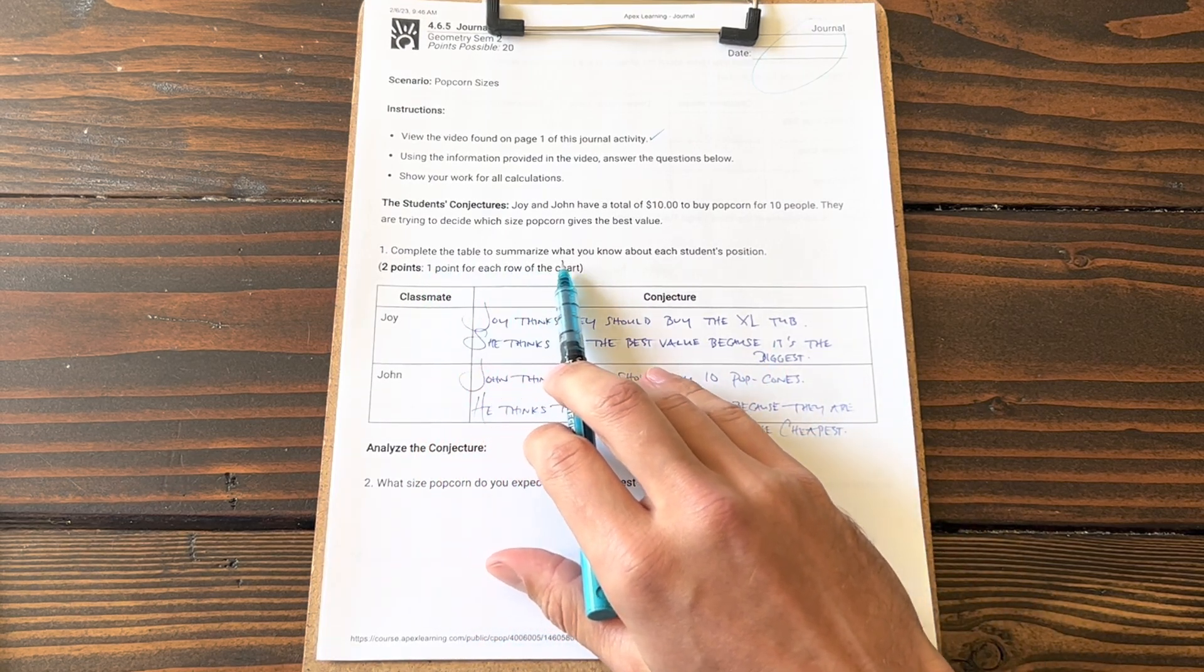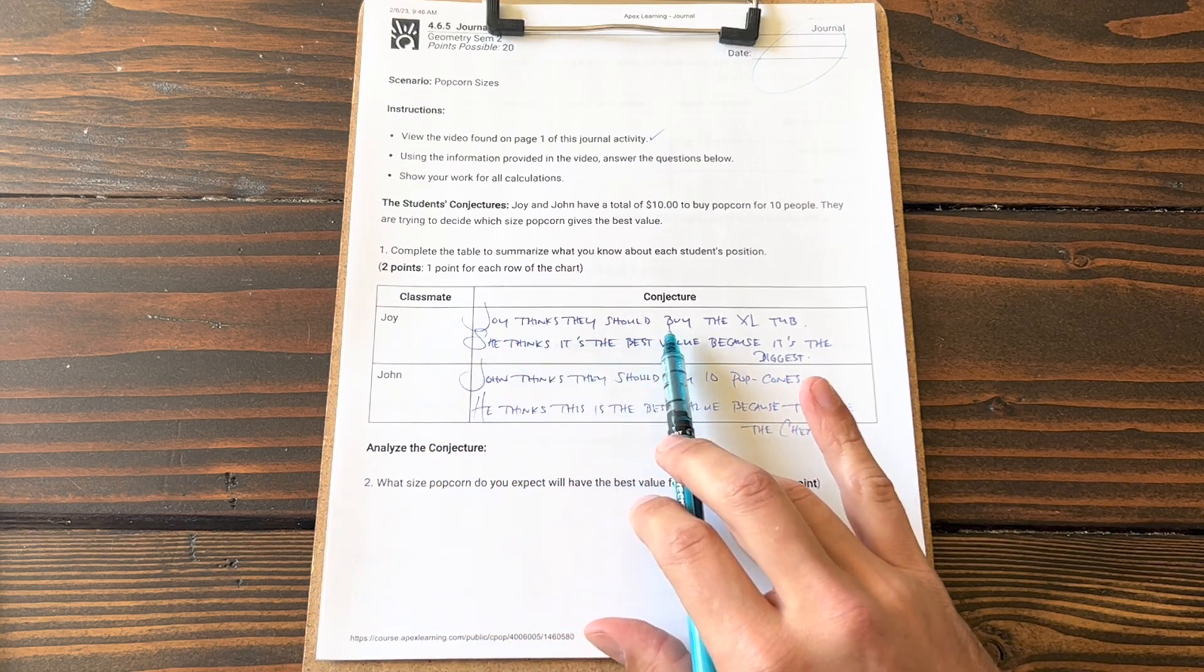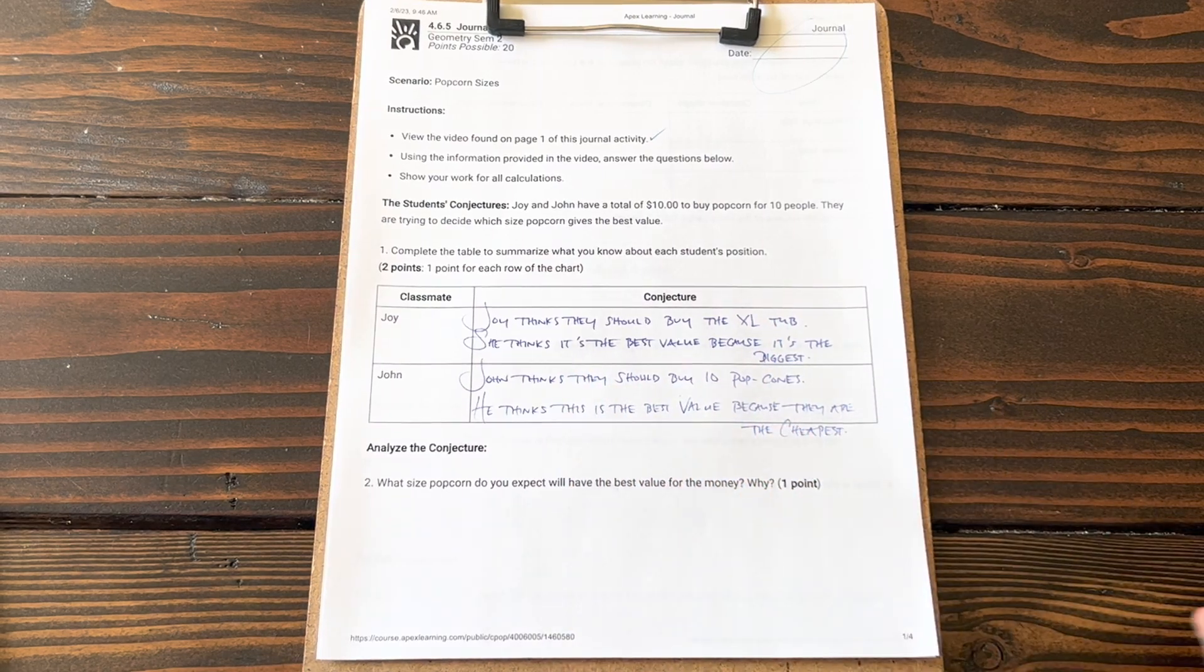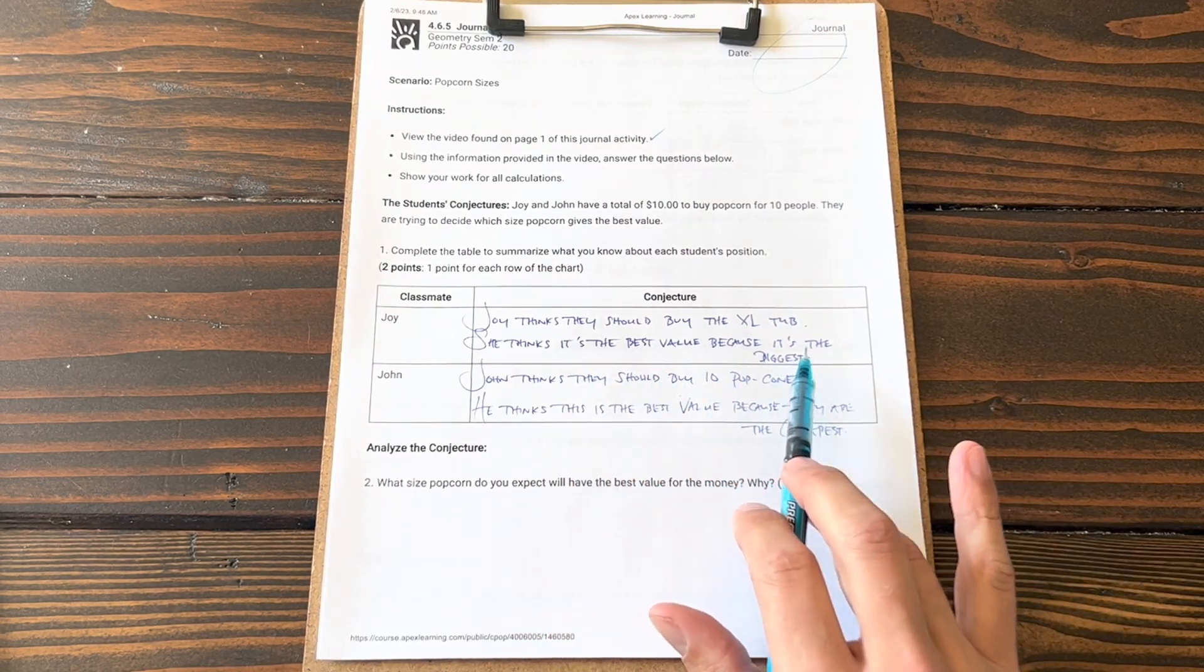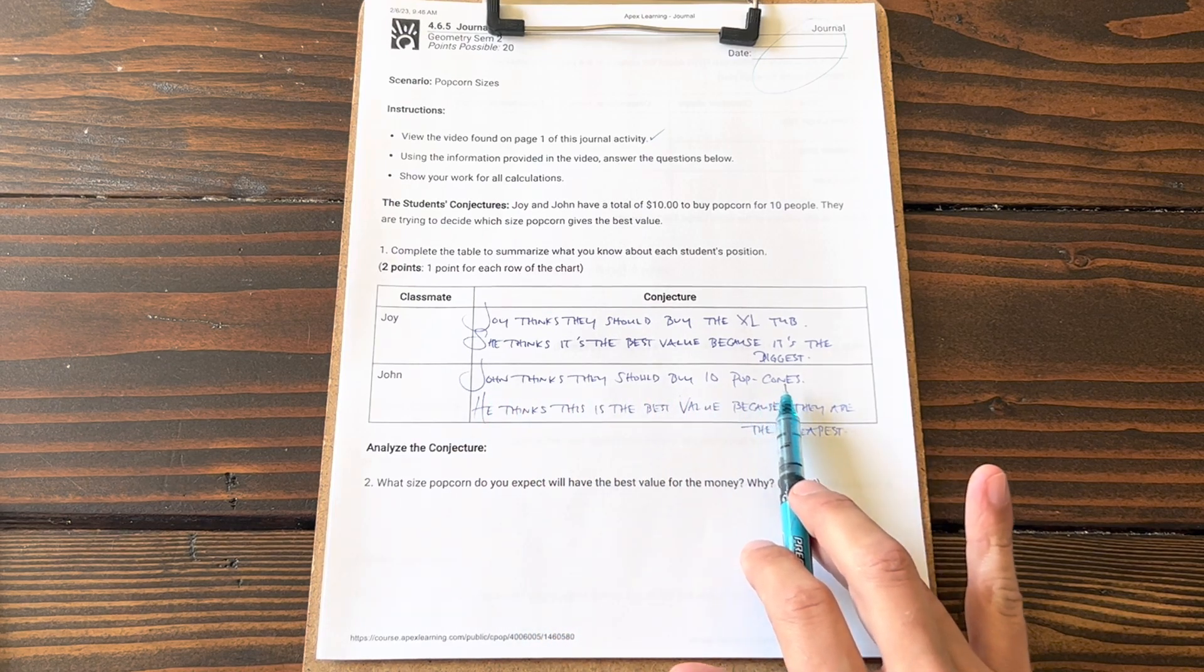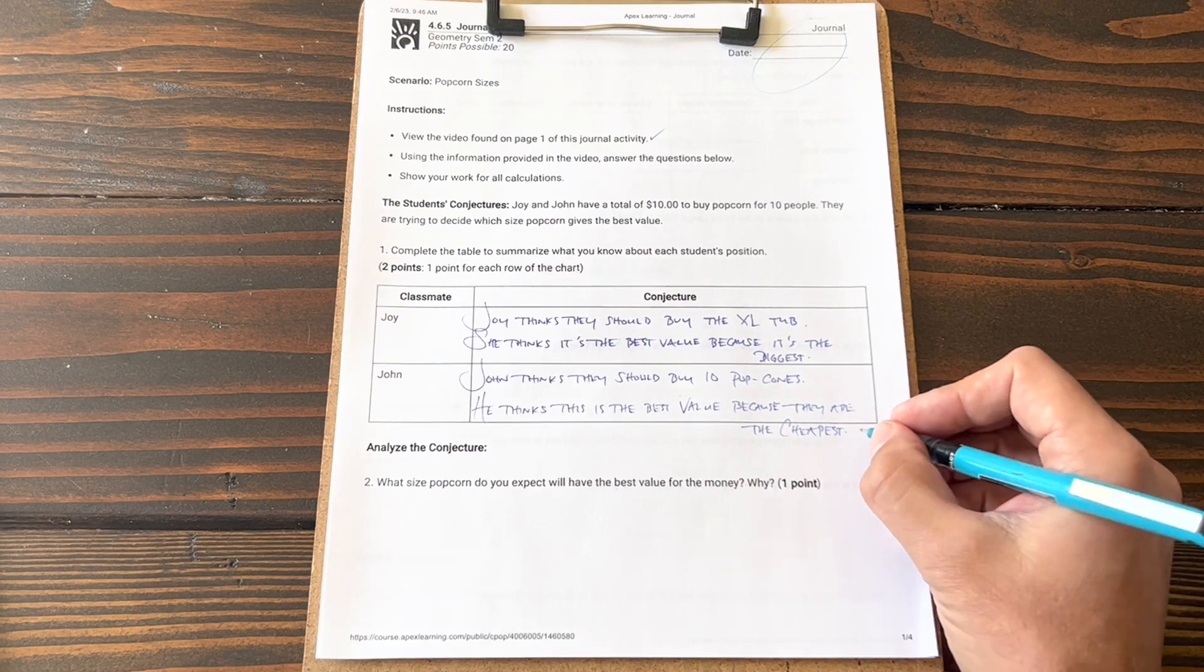I've pre-filled out this chart. Complete the table to summarize what you know about each student's position. Joy thinks that they should buy the extra large tub of popcorn. She thinks that the extra large tub will be the best value because it's the biggest. John thinks they should buy 10 separate popcorns and he thinks this is the best value because they are the cheapest.